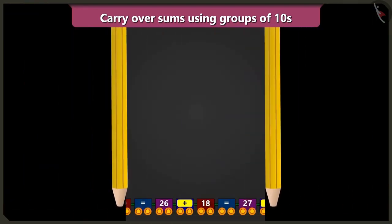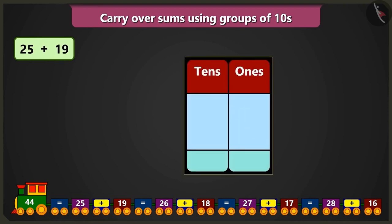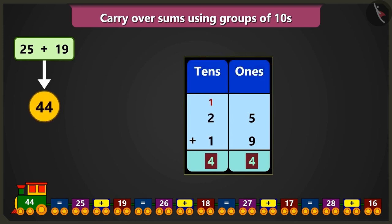Let me explain. In this train, first of all 25 and 19 have been added. So now we will place these numbers in the box of tens and ones and add them. Adding 5 ones and 9 ones will result in 14. Out of 14, we will place 4 in the ones place and carry over 1 in the tens place. Now in the box of tens, the carry over 1 when added to 2 will be 3, and adding 3 and 1 will make 4. So 4 tens and 4 ones will be the number 44.